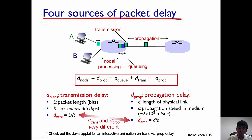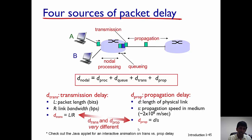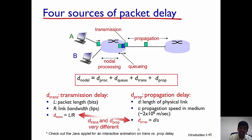The most important point to note is that transmission delay and propagation delay are very different. Transmission delay is the amount of time the router takes to transmit the packet — that is, when the packet is at the head of the router's buffer, it has to put the packet onto the wire. Once the packet has been put onto the wire, it has to travel across the wire from one router to the next — that is the propagation delay.